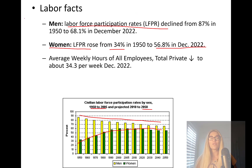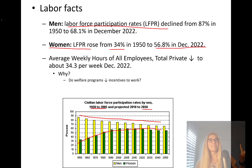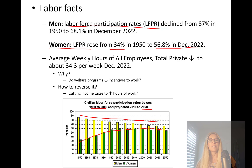Another fact is that average weekly hours for all employees — total private — has been declining. It is at 34.3 hours per week recently. So why is this happening? That's one of the things this class will give you tools to answer. Is it welfare programs decreasing incentives to work? If so, how to reverse it? Can we cut income taxes to increase hours of work? These are some of the ideas we'll learn in this class.